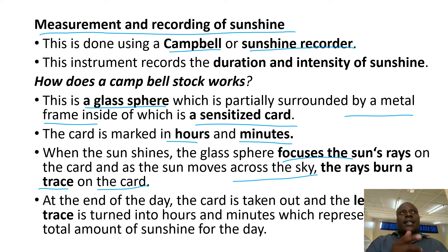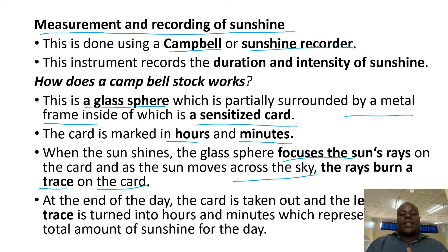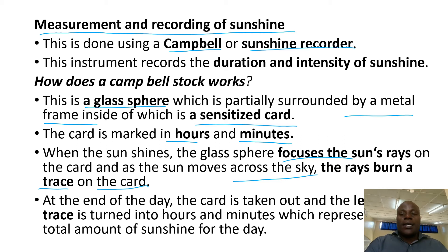There are lines on the card and they get burned. At the end of the day, the card is taken out and the trace is converted into hours or minutes, which represent the amount of sunshine received in a day.